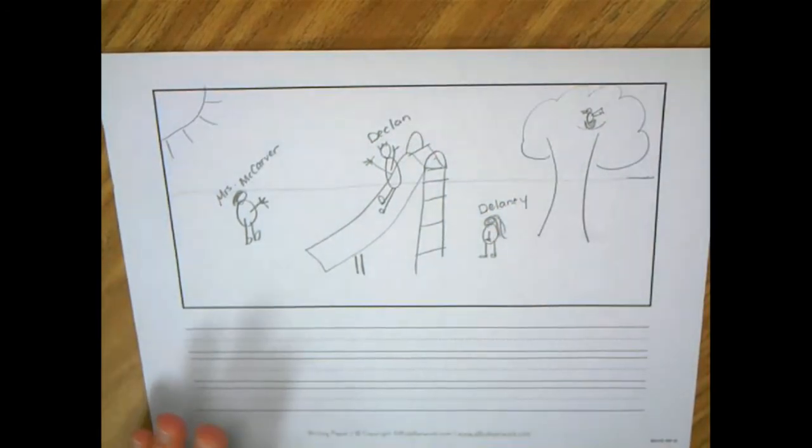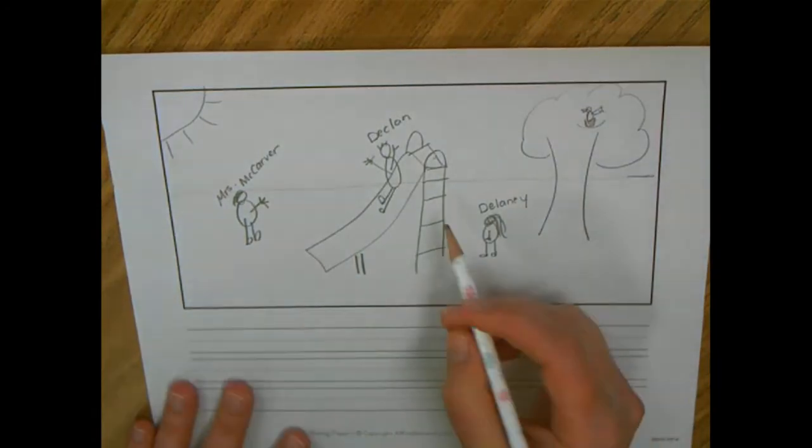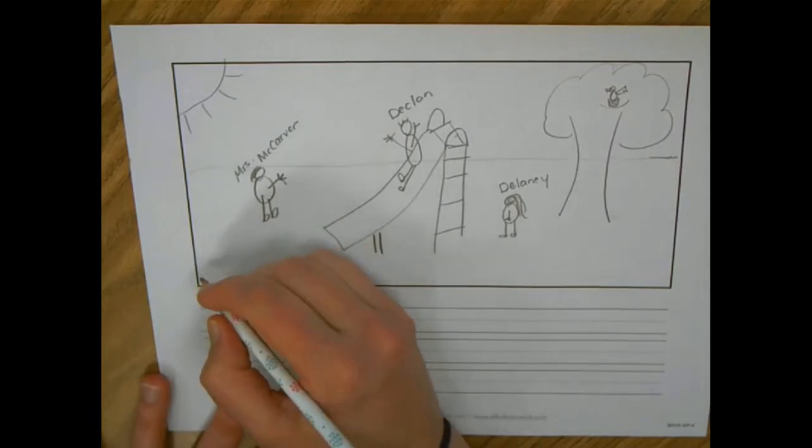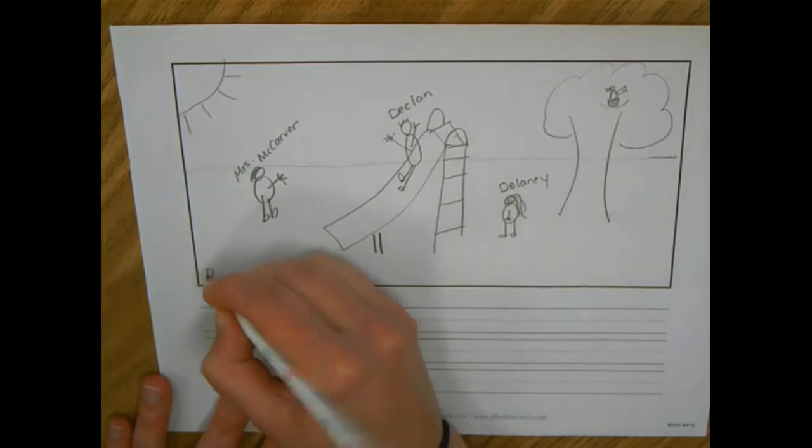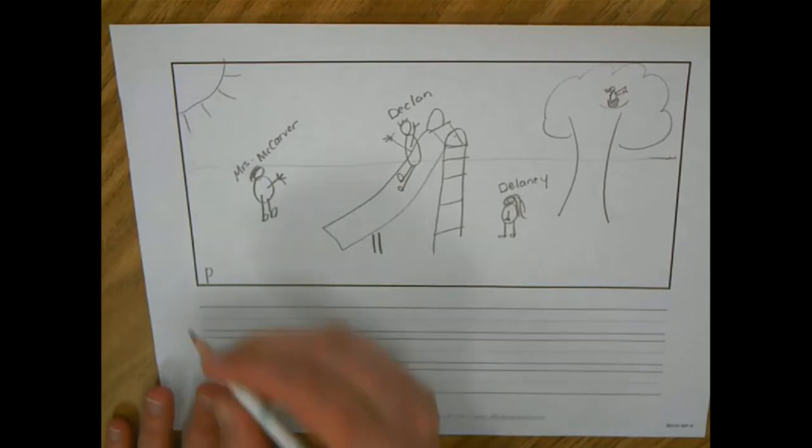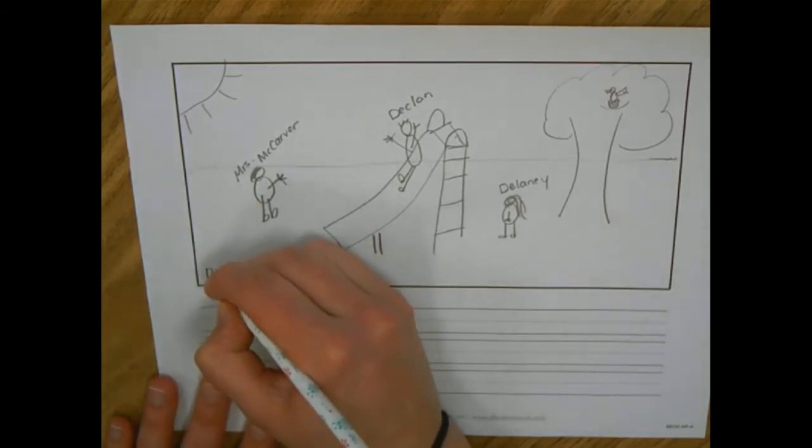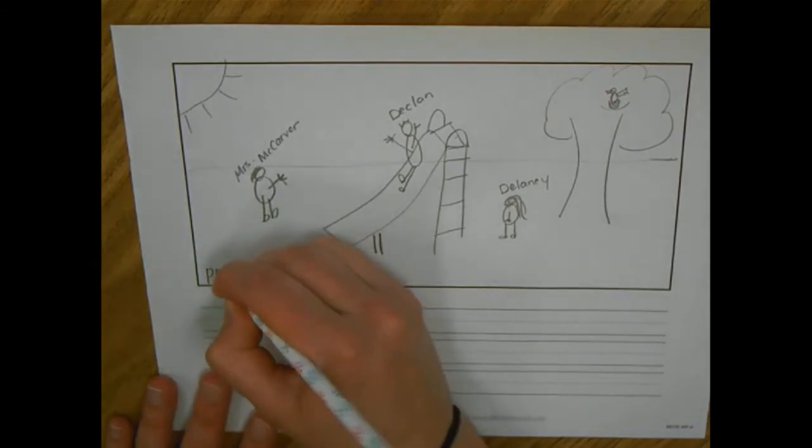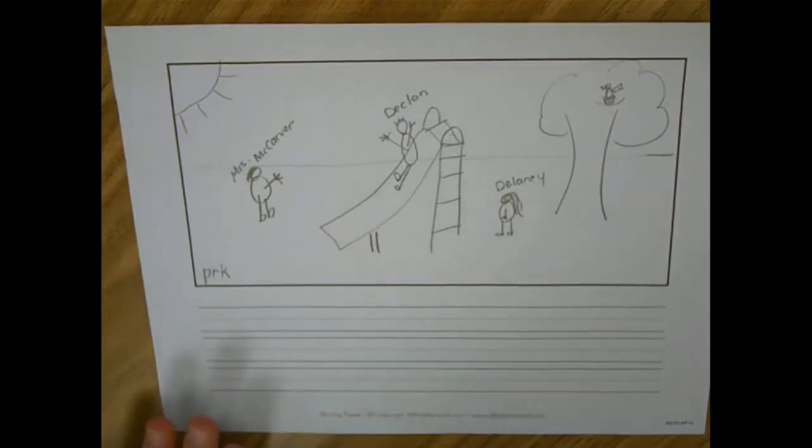Now the other important details in my story are that we're at the park. So maybe I'm going to label the picture with the word park. I want to say the word slowly, park, and listen for the sounds I hear. The first sound I hear is the 'puh' sound. Let me add that P. R. Oh, that's easy. I hear the R. Park. Okay, I hear the 'kuh' at the end. So now I've worked on the word park.